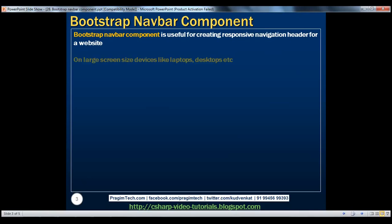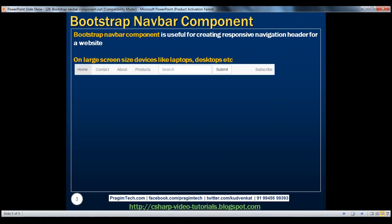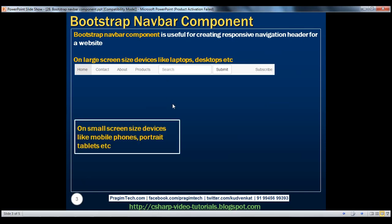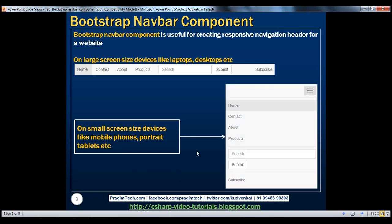By responsive, we mean on large screen devices like laptops, desktops, etc., where we have enough room to display the entire navbar horizontally, it appears normal. However, on small screen devices like mobile phones, portrait tablets, etc., where we don't have enough room to display the navbar horizontally, the navbar collapses to a button with three horizontal lines, and when we click on this button, the navbar expands vertically.